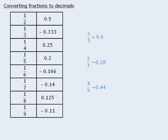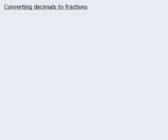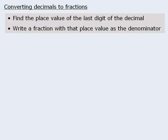Now let's reverse the process and learn how to convert decimals to fractions. The steps are as follows: first, find the place value of the last digit of the decimal, and then write a fraction with that place value as the denominator.